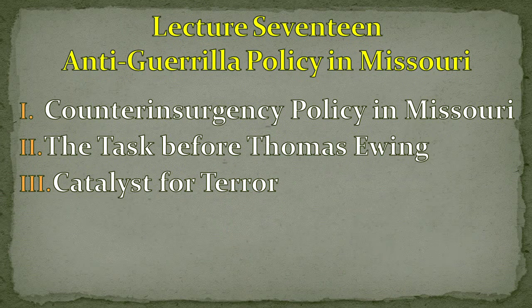We begin today by reviewing the Union's counterinsurgency measures, what one historian has described as a dominion system. We'll next consider the particular challenge before General Thomas Ewing Jr., the officer charged with containing guerrilla violence along the Kansas border. Convinced that the Army could not stop these bushwhackers without first eliminating their basis of support, Ewing moved boldly, and his policy set off a series of events that brought the guerrilla war to its terrible climax.